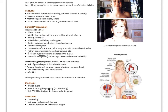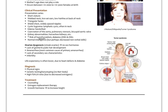Life expectancy in Turner syndrome is often lower due to the heart defects and diabetes. Diagnosis is usually clinical with physical signs; karyotype testing shows no Barr bodies. Labs typically show high FSH and low LH due to decreased estrogens, which fail to provide negative feedback to down-regulate FSH. Treatment involves counseling, estrogen replacement therapy, and potentially growth hormone to increase height. This is an important genetic cause of primary hypogonadism to recognize, particularly when working with children.